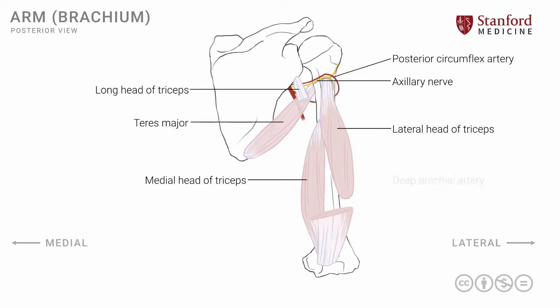The brachial artery then continues from the axillary artery and gives off another branch known as the deep brachial artery. This branch exits through the triangular space and wraps around the middle third of the humerus. The position of this artery around the humerus has a groove — a very shallow groove — called the spiral groove of the humerus. This deep brachial artery is accompanied by a nerve, which is a branch of the brachial plexus, known as the radial nerve. The radial nerve and the deep brachial artery travel together in the spiral groove, and are very closely related to the mid-shaft of the humerus.